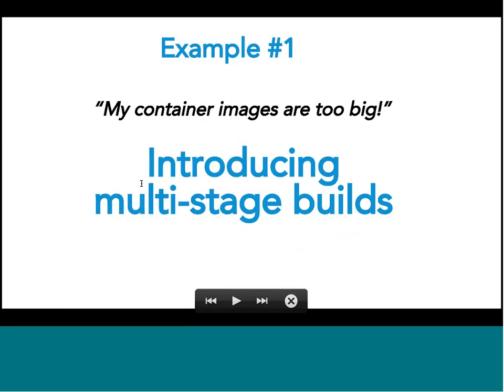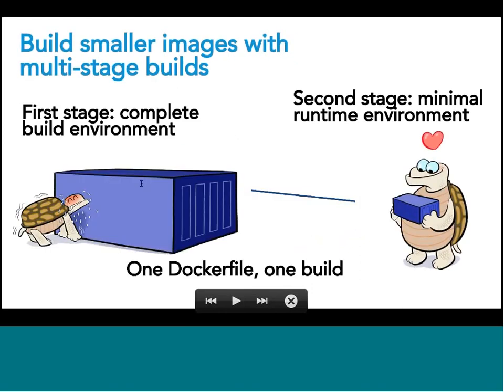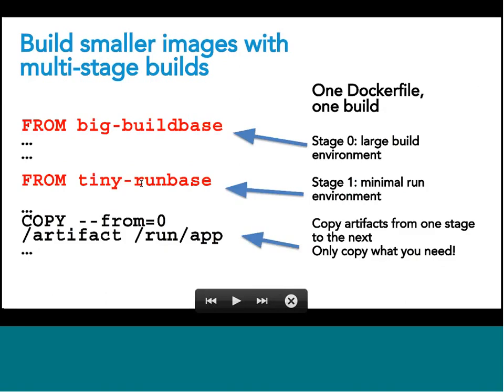The solution is multi-stage builds, which allows you to use several stages in your Dockerfile. You can have a first stage with all the build dependencies that builds the application, and then in the second stage you just have the runtime dependencies and copy the build artifact from the first stage. You can have as many phases as you want in a multi-stage build.